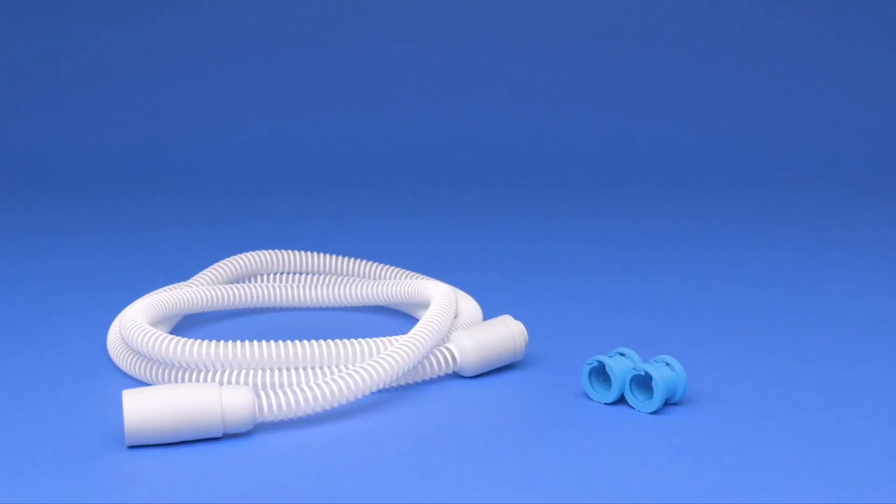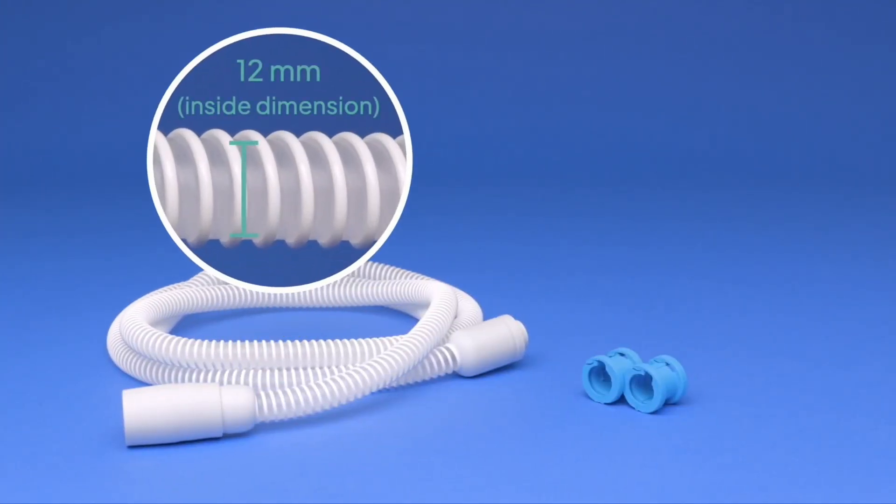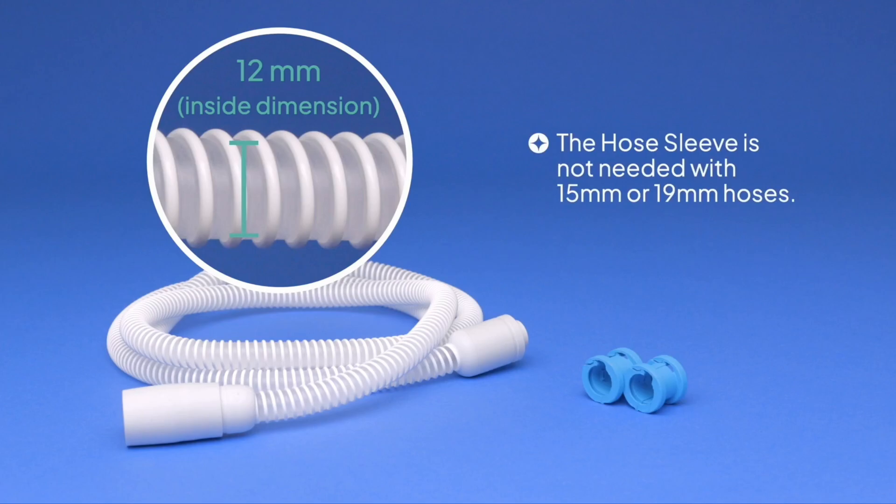If you have a 12mm hose, you will need to use the hose sleeve to ensure a proper fit when placed inside your SoClean. The hose sleeve is not needed with 15mm or 19mm hoses.